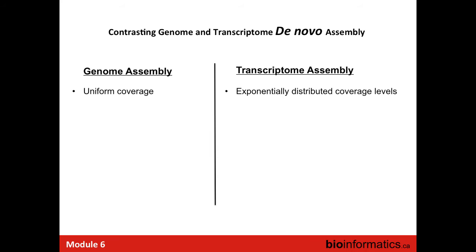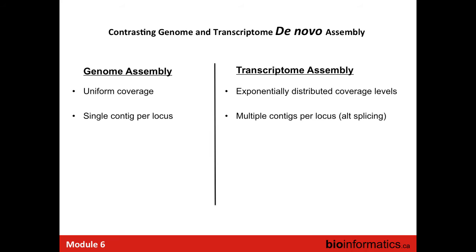With a genome assembler, if it encounters a region with very high coverage, it doesn't interpret it as a highly expressed region — it thinks it's a repeat region and puts those reads in a separate bucket. So when you apply a genome assembler to transcriptome data, all your highly expressed transcripts get set aside and possibly never assembled. Another difference: with genome assembly you expect a single contig per gene, ideally entire chromosomes. With transcriptome data, you expect multiple contigs per gene if you have evidence for alternative splicing.